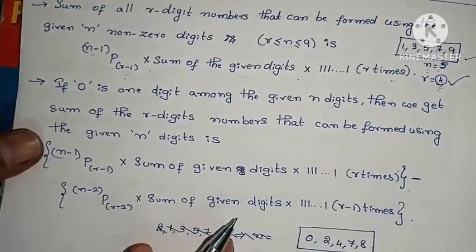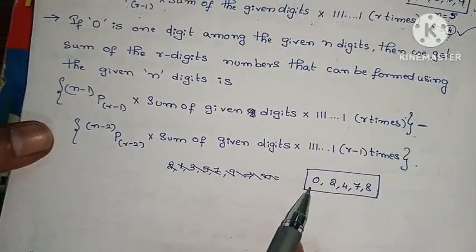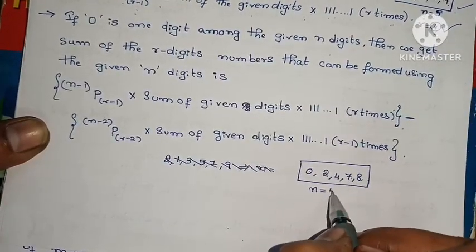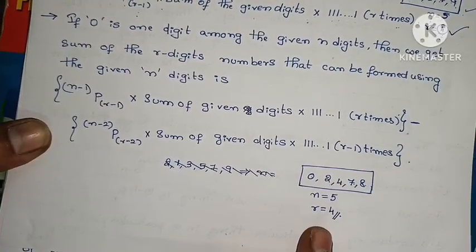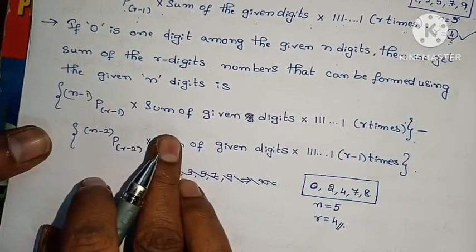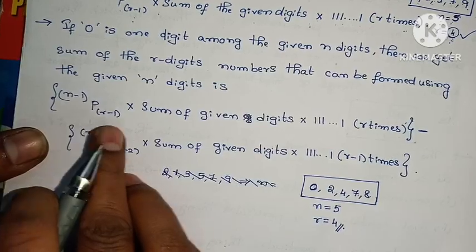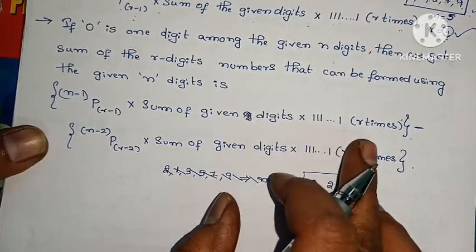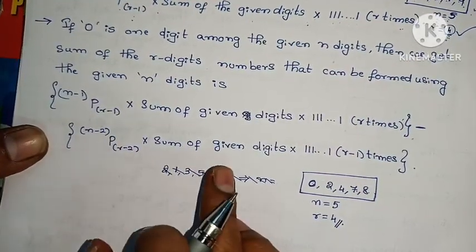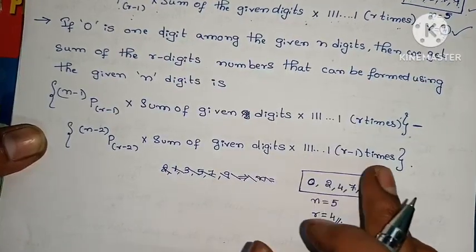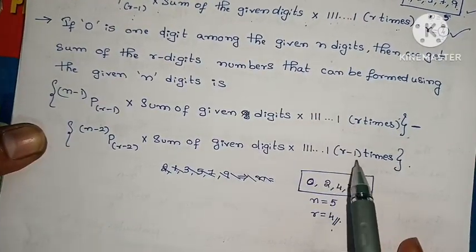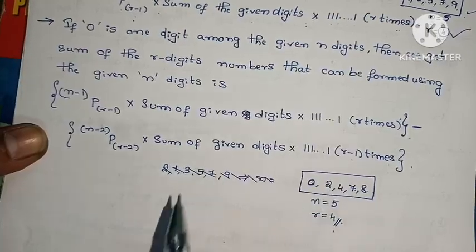Now if the digits include 0, the formula changes. With n value 5 and r value 4, the formula becomes: (n-1)P(r-1) into sum of given digits into 111...1 (r times), minus (n-2)P(r-2) into sum of given digits into 111...1 (r-1 times). This adjustment accounts for 0 appearing in the leading position.